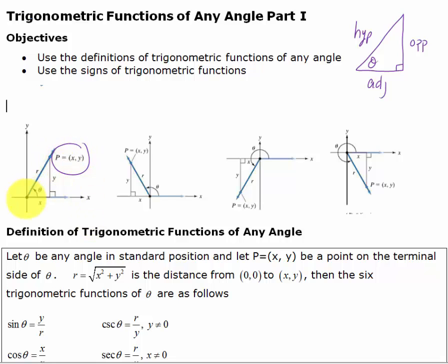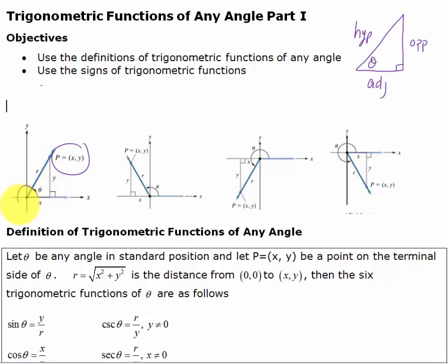Remember, the initial side is on the x-axis. We call the terminal side R, and the reason why we call that R is because we think of rotating this angle around in a circle — then R would be the radius of the circle.